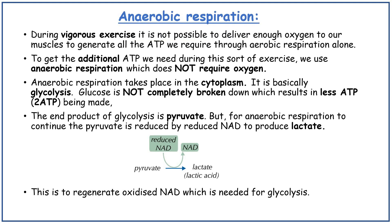Finally, anaerobic respiration. During vigorous exercise, it is not possible to deliver enough oxygen to muscles to generate all the ATP required through aerobic respiration alone. To get the additional ATP needed, we use anaerobic respiration, which does not require oxygen. Anaerobic respiration takes place in the cytoplasm — it is basically glycolysis. Glucose is not completely broken down, resulting in only two ATP being made. The end product of glycolysis is pyruvate, but for anaerobic respiration to continue, the pyruvate is reduced by reduced NAD to produce lactate. This regenerates oxidised NAD, which is needed for glycolysis to continue.